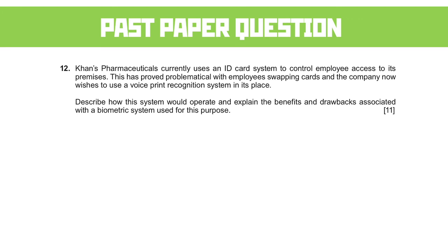The question: Karnes Pharmaceuticals currently uses an ID card system to control employee access to its premises. This has proved problematic, with employees swapping cards, and the company now wishes to use a voice print recognition system in its place. Describe how this system would operate and explain the benefits and drawbacks associated with the biometric system. This gives you a very obvious way to overlap with another unit that talks about voice assistants and voice print recognition, combining that with biometrics to show knowledge across the specification.